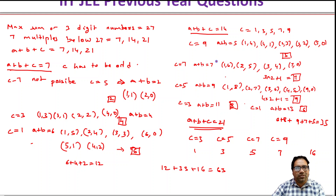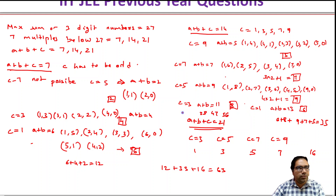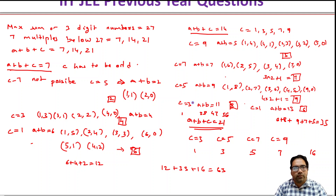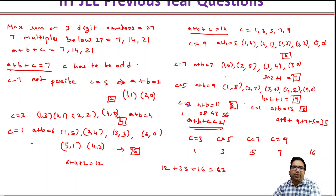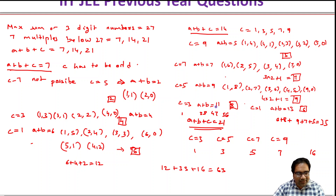When c equals 3, a plus b should equal 11. Counting the valid pairs: (2,9), (9,2), (3,8), (8,3), (4,7), (7,4), (5,6), (6,5) — that is 4 pairs times 2, giving 8 options.